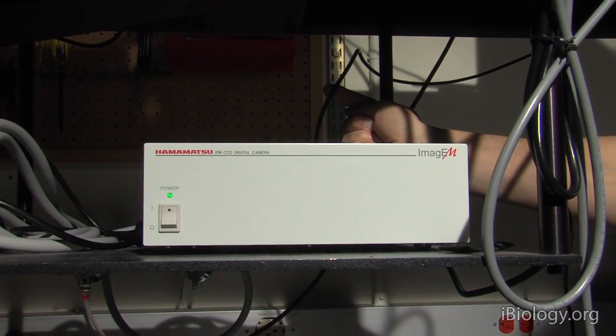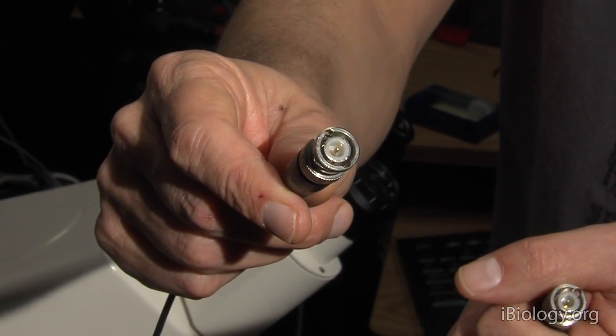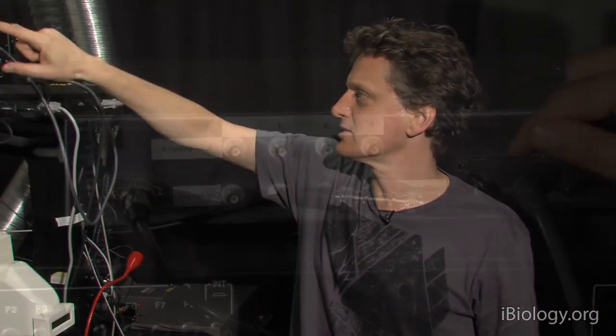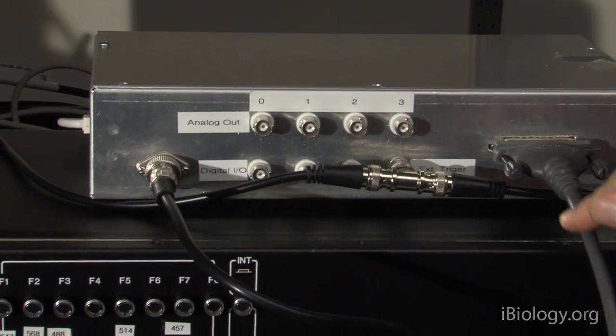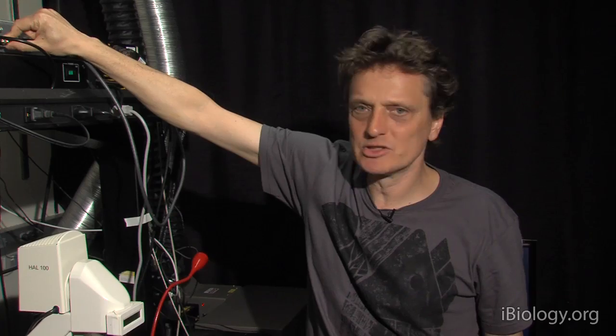So we'll now go through these different components and show how they are linked to each other through electrical signals. So first we go to the camera. The camera has a controller. On the back of that controller is a BNC cable. That BNC cable runs to this box here. This device has a little microcontroller in it that is reading out the state of this input continuously.